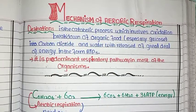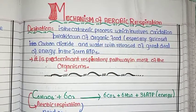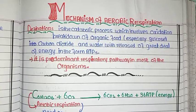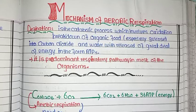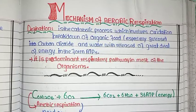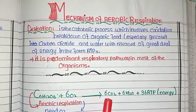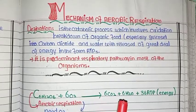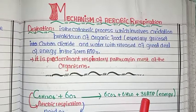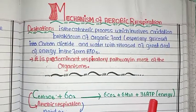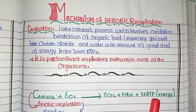Here glucose is a complex compound. We are breaking it down with the help of oxygen. When we break down glucose using oxygen, carbon dioxide and water are produced, along with 36 moles of ATP — that is the energy we get from this process.